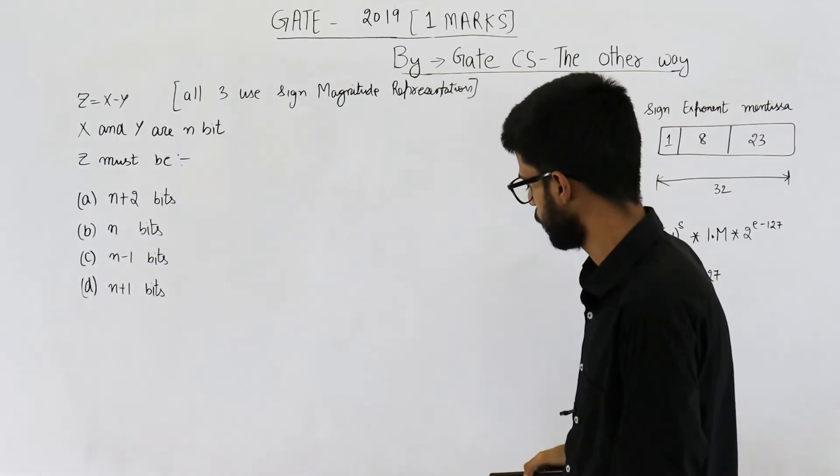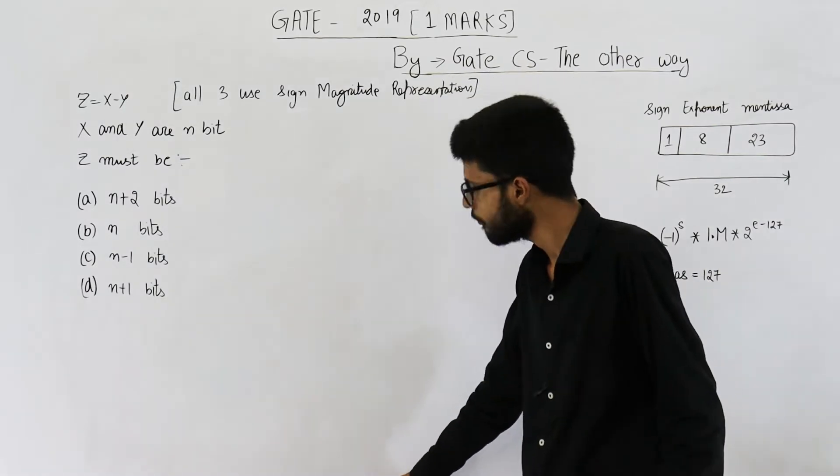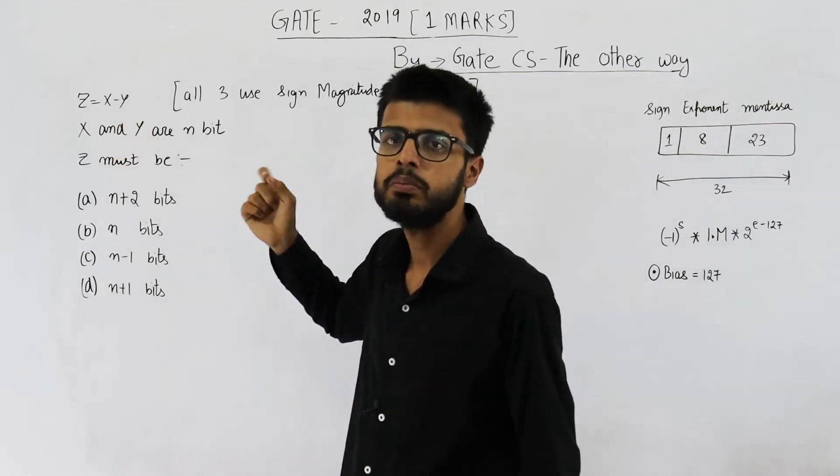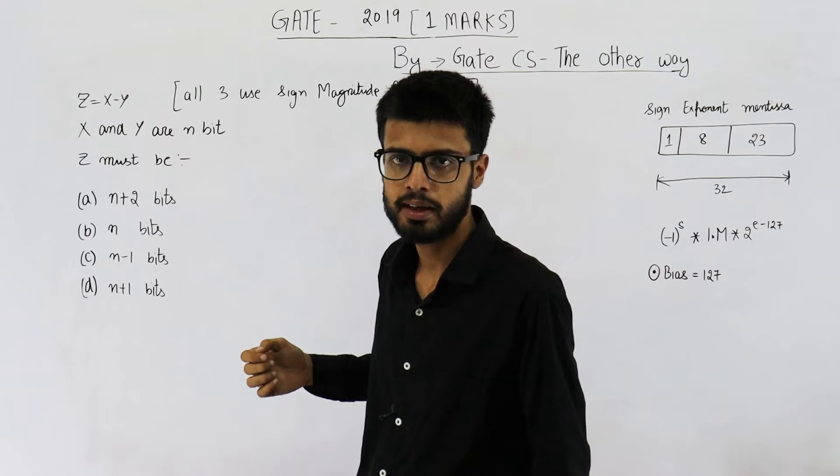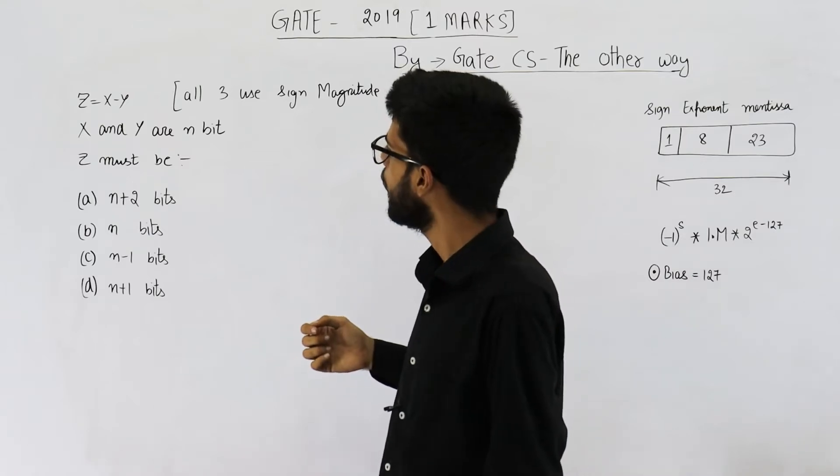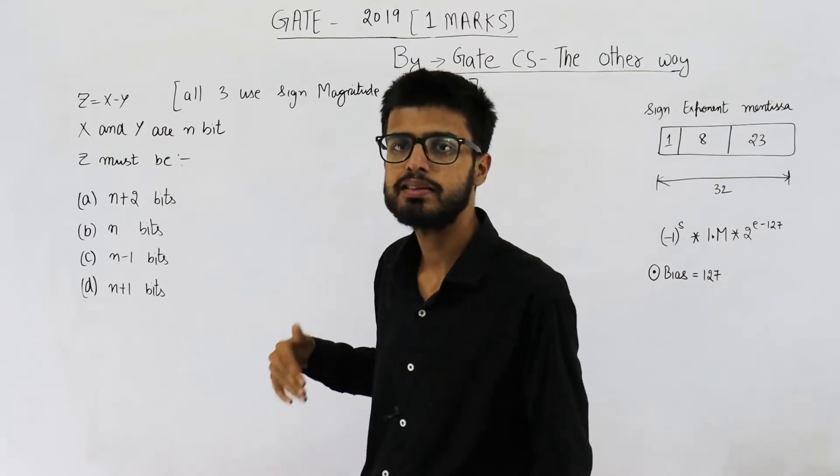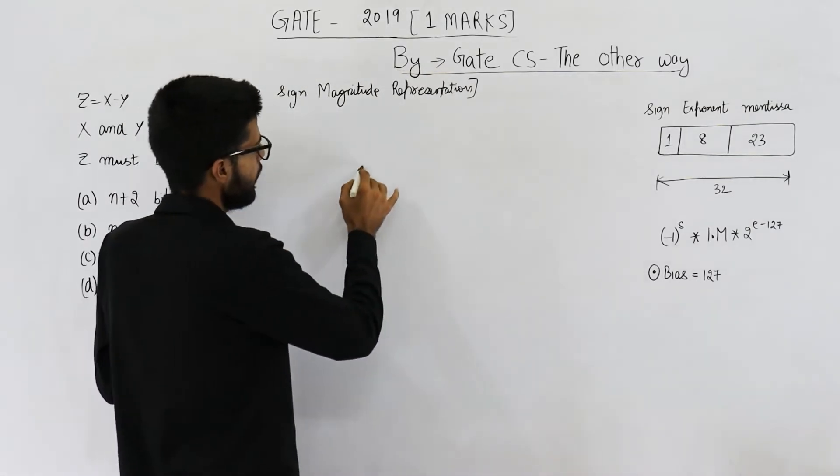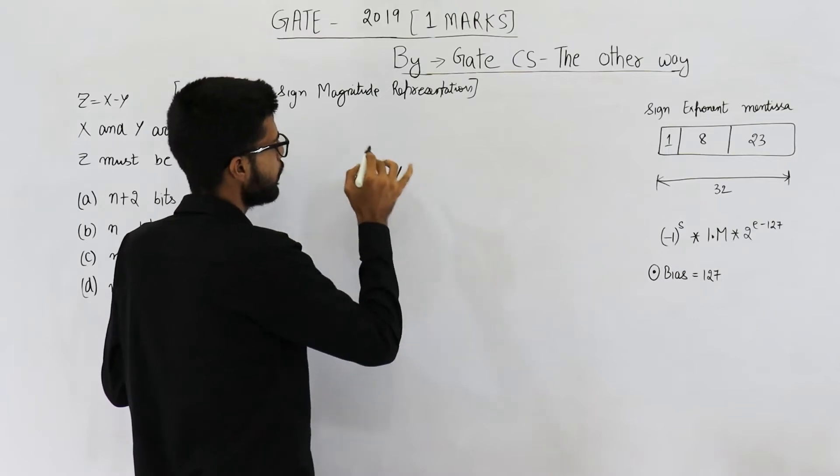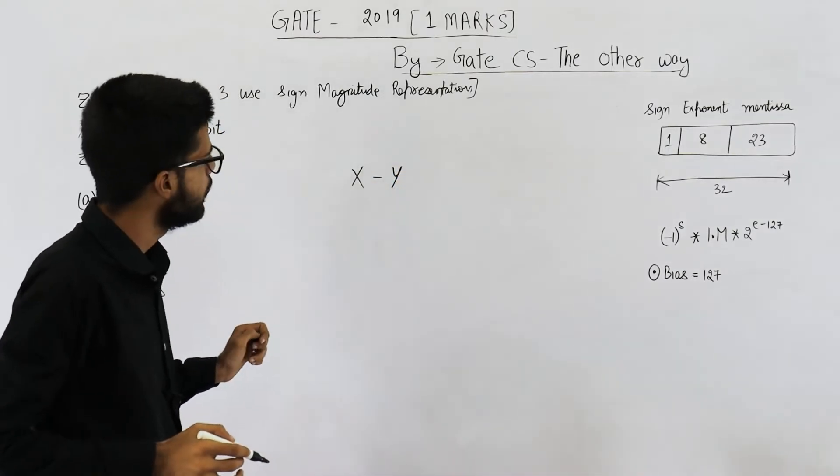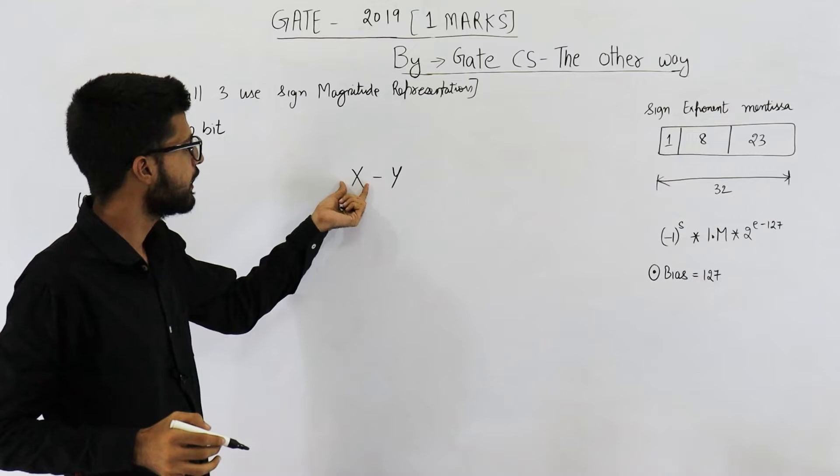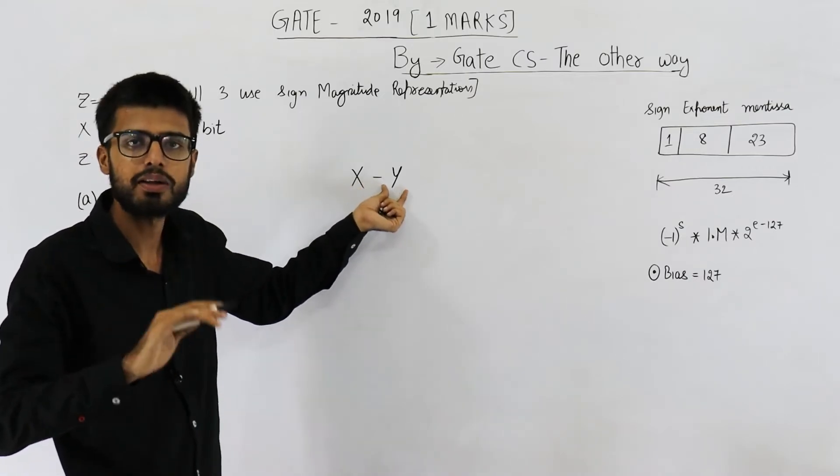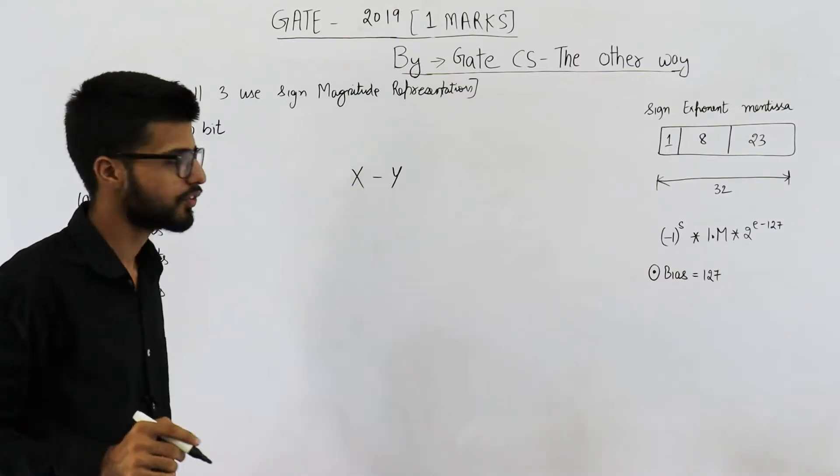So you can see we are subtracting a sign magnitude number from another sign magnitude number and let us see in worst case how many bits of overflow can be caused. So x and y both are of n bits. To cause overflow, if I take this one as the biggest positive number and this one as the smallest negative number, we will surely cause overflow.